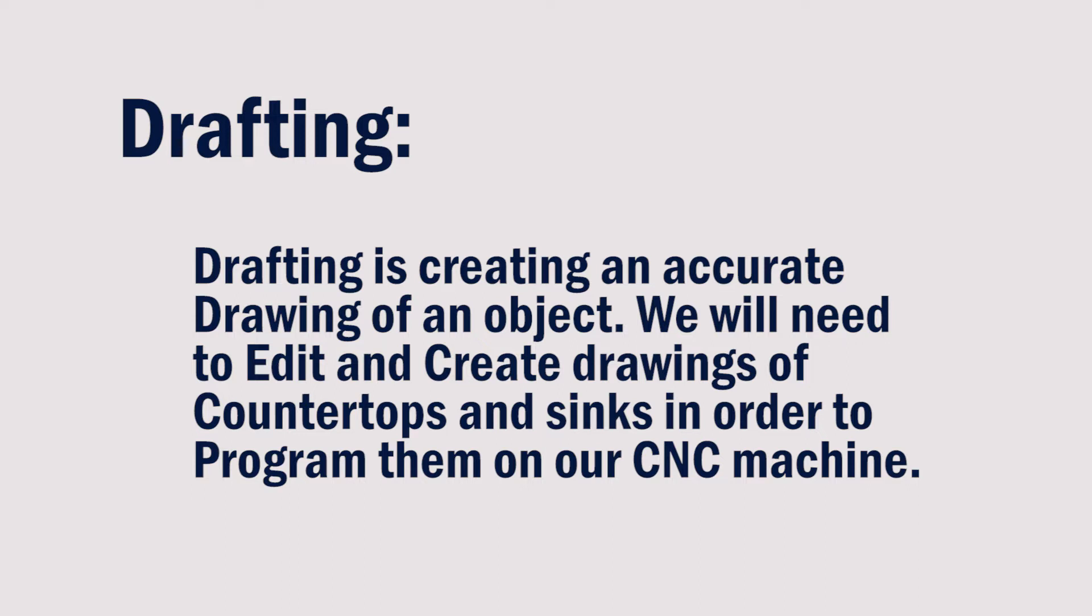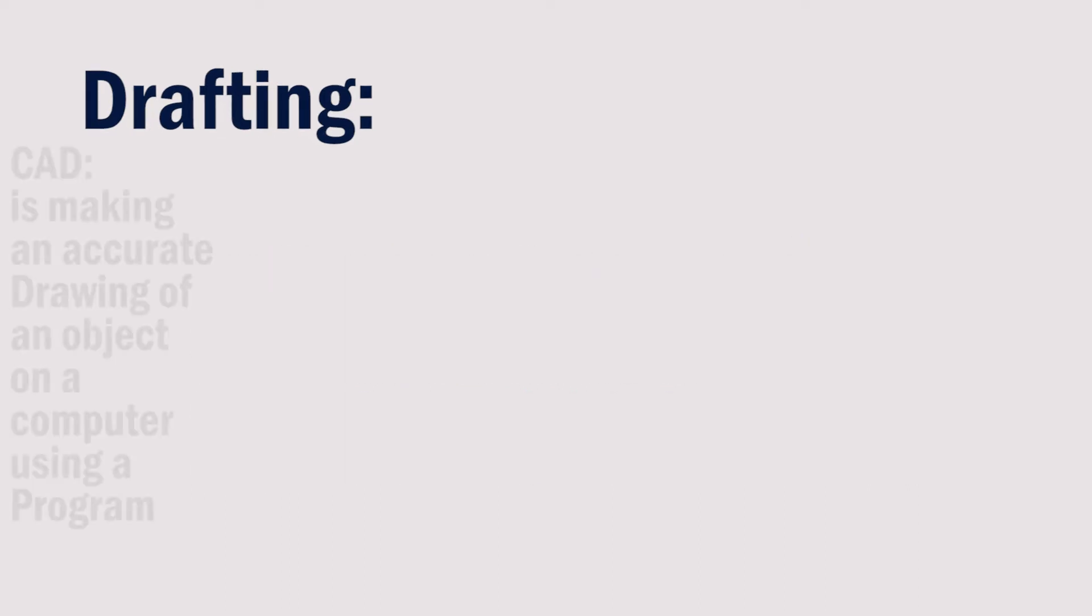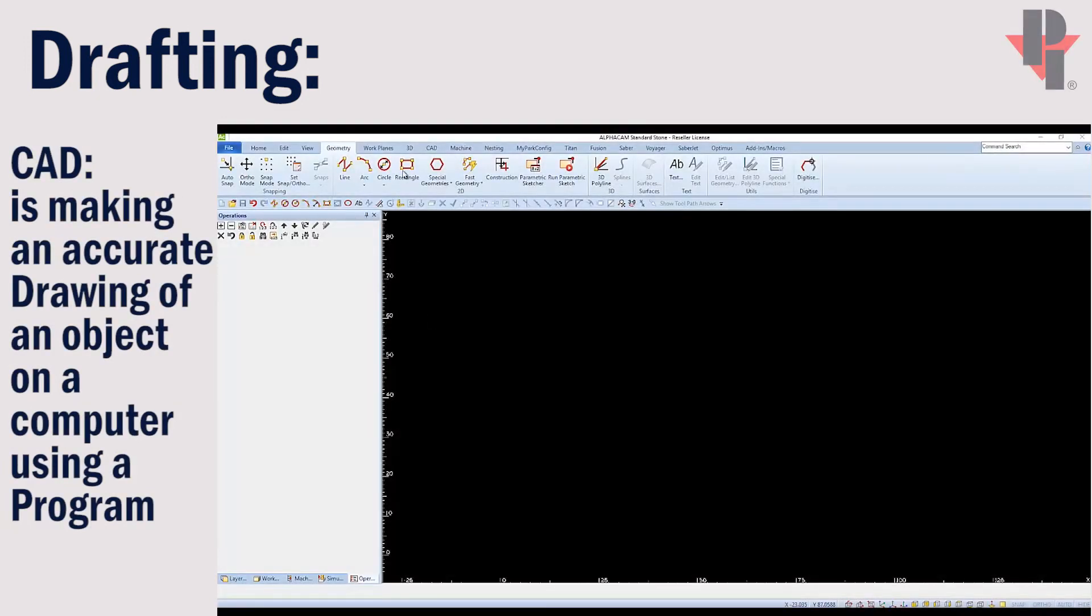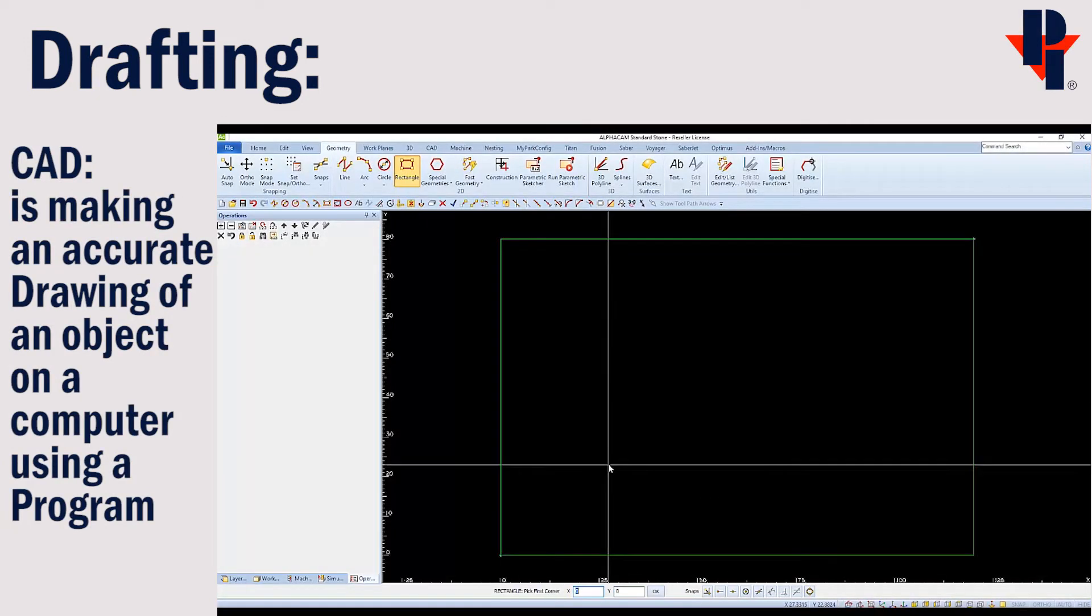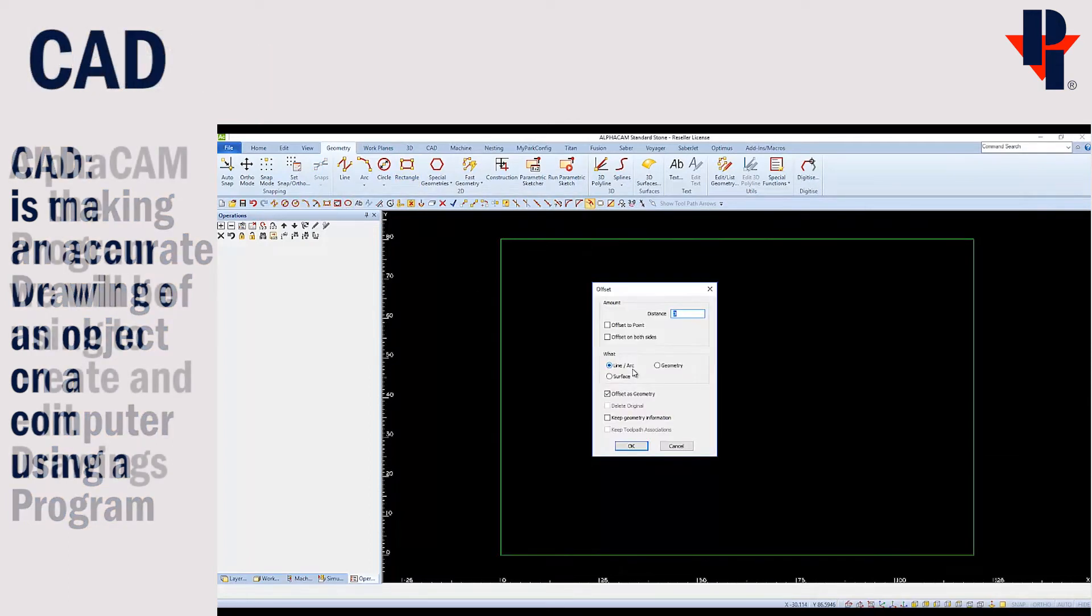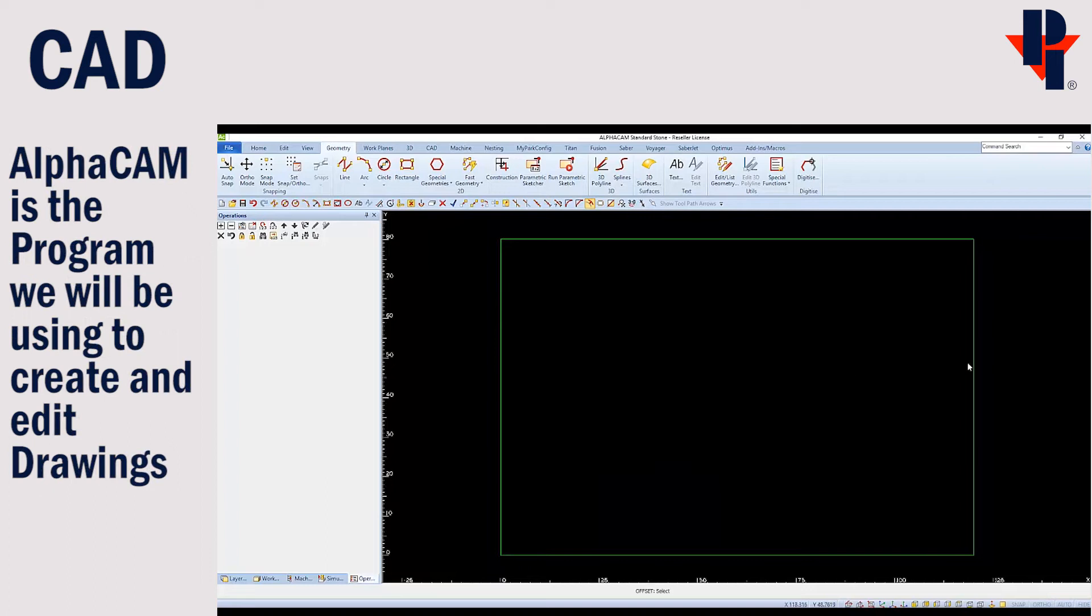Accurate digital drawings are needed to program a CNC. We can either edit a drawing that was supplied from a digital template system or we can draw by hand using the commands as shown.